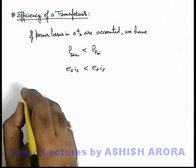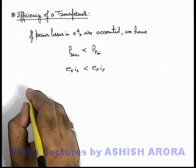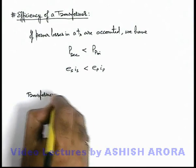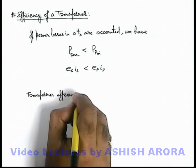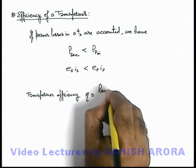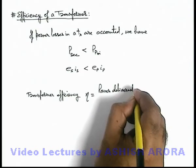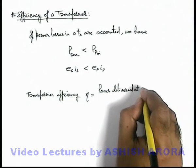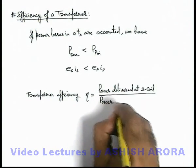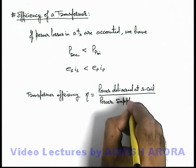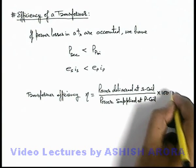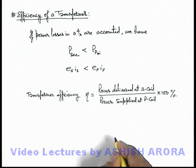As we know, efficiency is defined as output by input. Here we can write transformer efficiency. This can be written as η equals power delivered at secondary coil of transformer divided by power supplied at primary coil of transformer, multiplied by 100. This will be the transformer efficiency in percentage.